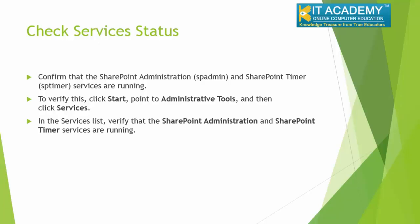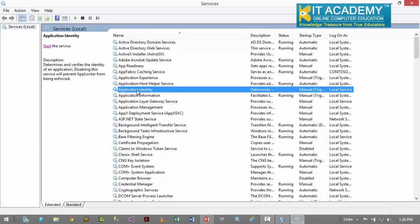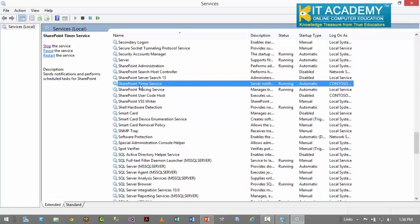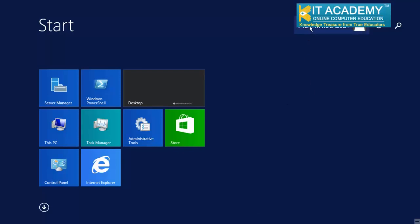Before I start configuring the DNS server, there's one important thing to verify: both the SharePoint Administration and the SharePoint Timer services must be running before you start any of the other steps. Let's go to Administrative Tools > Services and verify. Just type 'SH' and you can see the SharePoint Administration service is running, and the SharePoint Timer service is also running. These two services must be running. Please note, I'm currently logged in as the domain controller administrator, so most of the steps I'll execute now will be done as administrator.